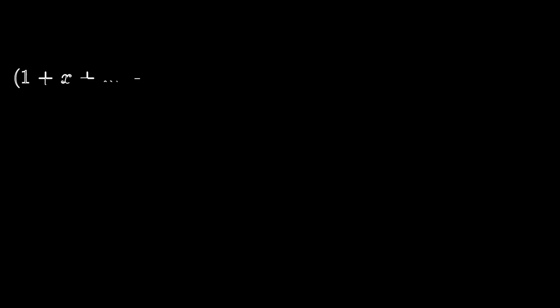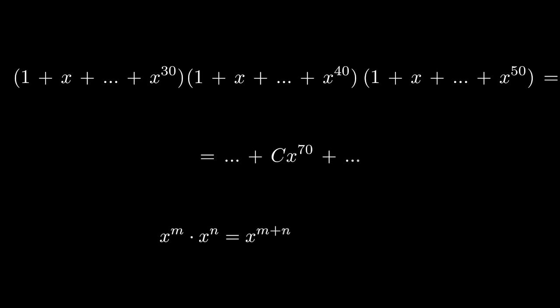Now, we need to multiply these three guys, and the coefficient in front of x to the 70th will be our desired answer. This is because powers add when you multiply two x's, and there is the same number of ways to get x to the 70th in this product than there is a number of ways to choose 70 balls. But now we do a trick.